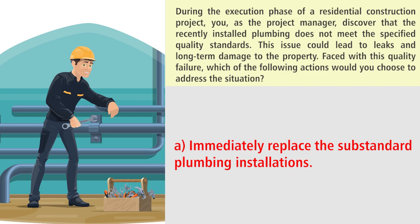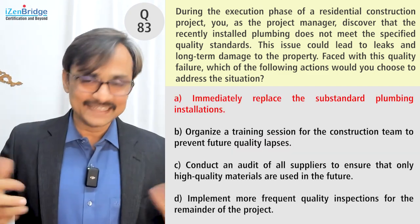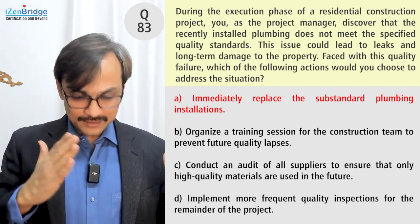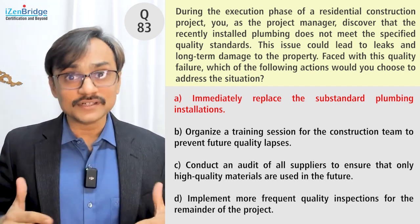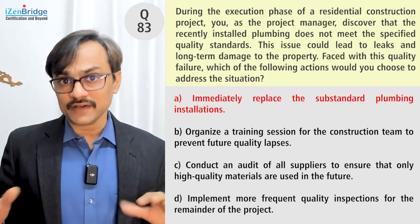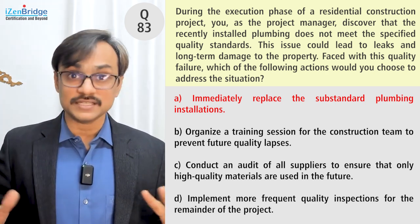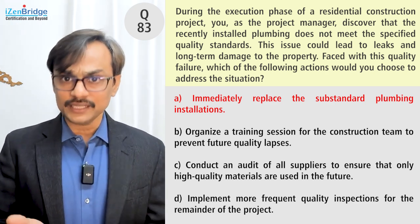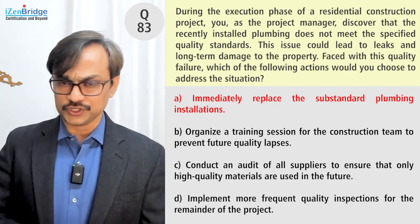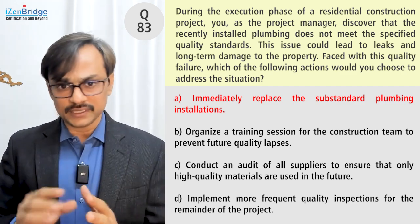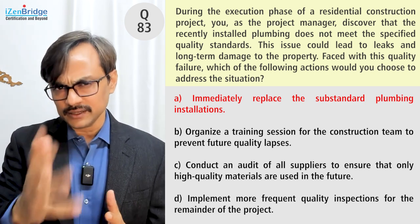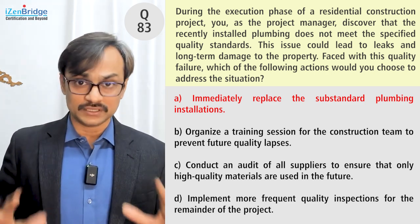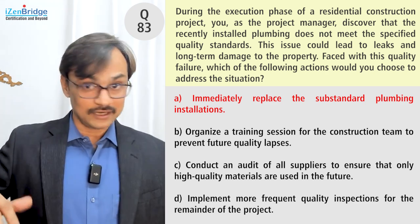Option A: immediately replace the substandard plumbing installation. This is a direct action — possibly a good choice. But I keep reminding myself: act after acknowledging and analyzing. So I need to see if there are 'acknowledge and analyze' options available; if not, this is a good idea. I need to replace this thing, take care of this issue, recognize it, assess the impact, and based on priority, act on it. That's a good idea — let's keep Option A as a candidate and move forward.